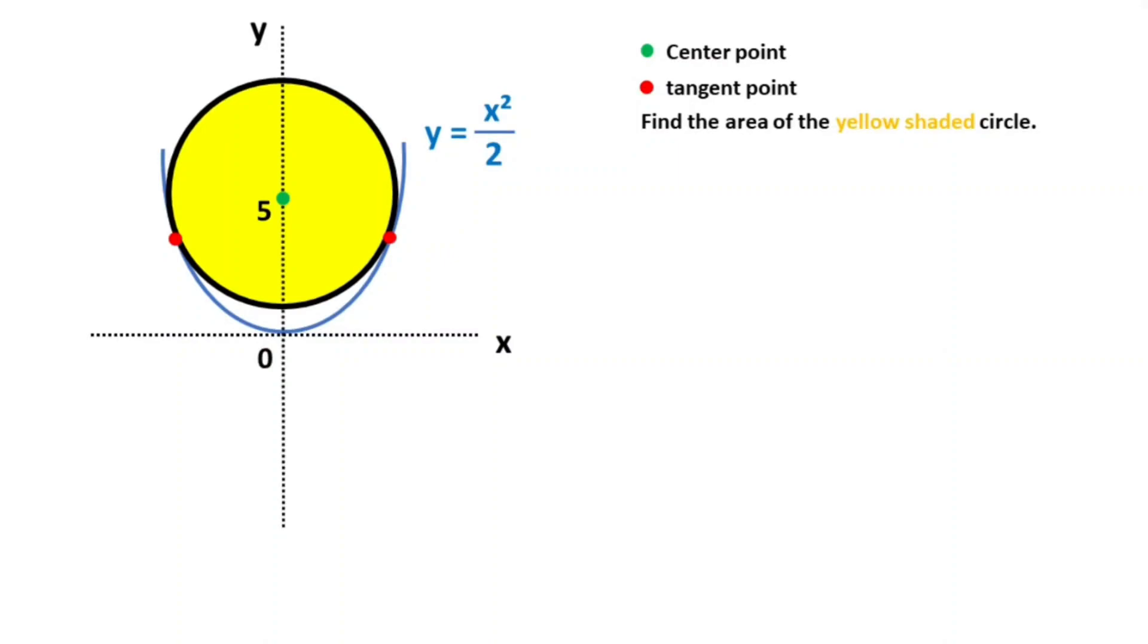Hello everyone, in this video we have one parabola and one circle. This length is given as five units, and the equation of this parabola is given as x squared over two. These are given as tangent point and here is the center of the yellow circle. The question is, what is the area of the yellow circle?